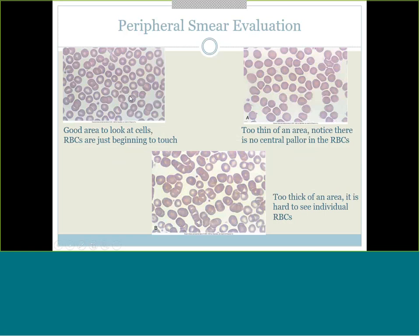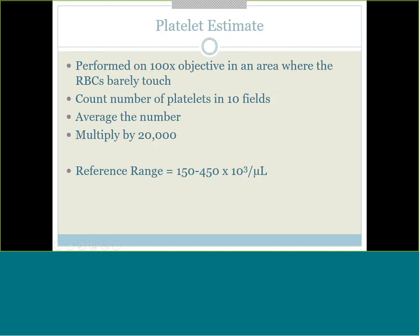To perform a platelet estimate, remember this going forward: you're going to perform this on the 100x oil objective. Count the number of platelets in 10 fields, average that number, and multiply it by 20,000 - that's your platelet estimate. The reference range for a normal platelet count is 150 to 450. Starting now, keep this all in mind.